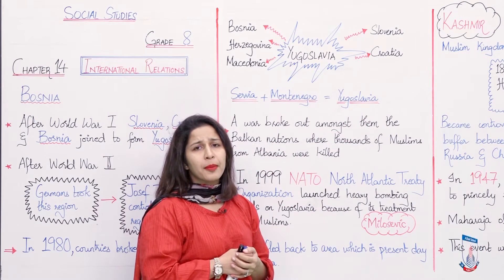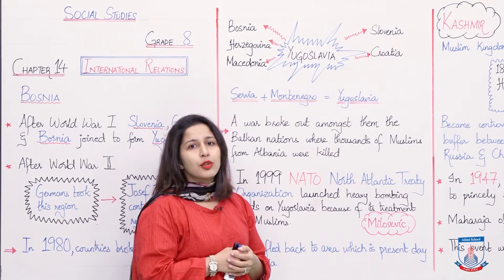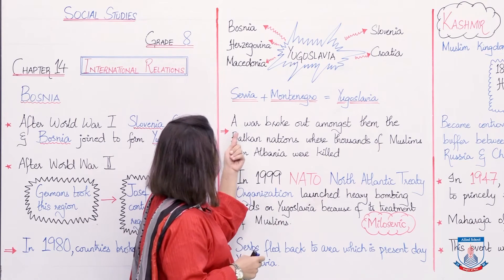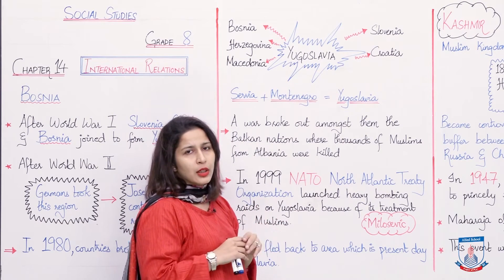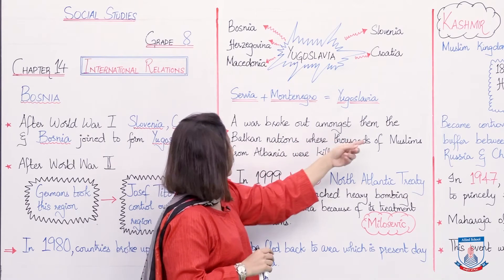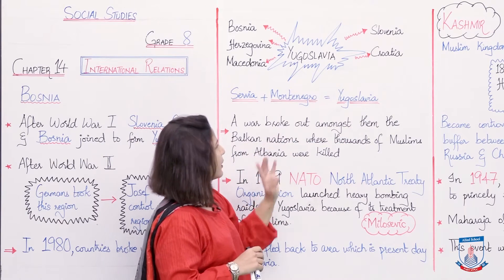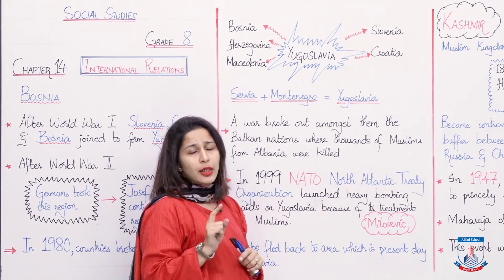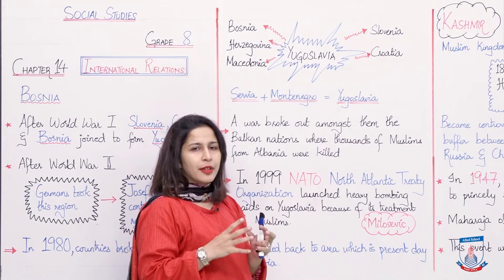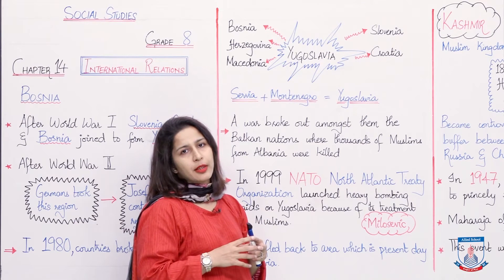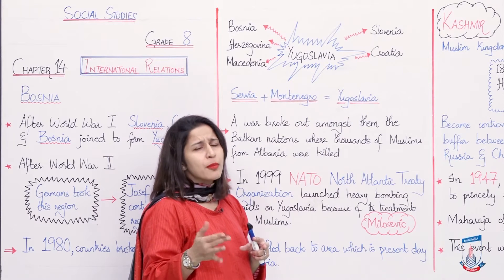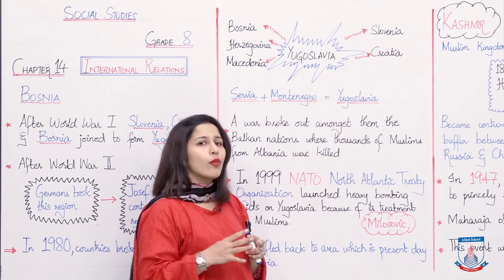Obviously there was unrest; people were unhappy. There were small fights and conflicts that kept going on. As a result of these communist uprisings and conflicts, a war broke out amongst the Balkan nations. The Balkan nations were a combination of different nationalities and religions — Muslims, Romans, Christians, Catholics — they were all part of it.